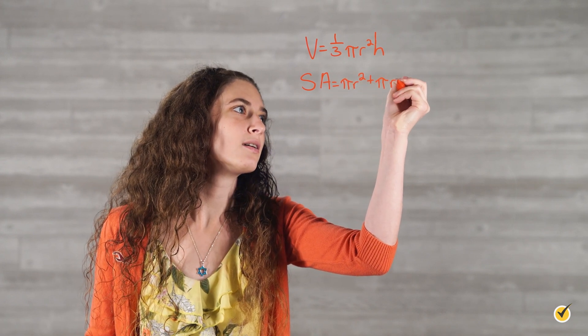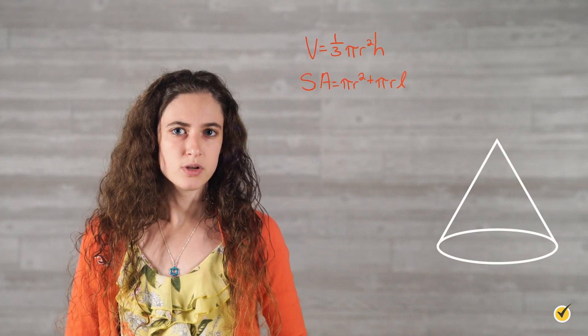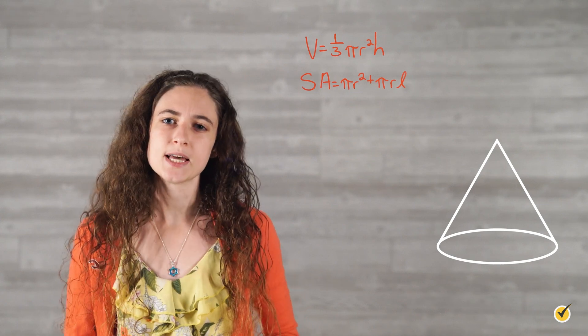Where r, h, and l represent different measurements on the cone. But which measurements do these letters, or as we call them in the math world, variables, represent?